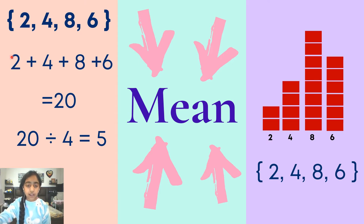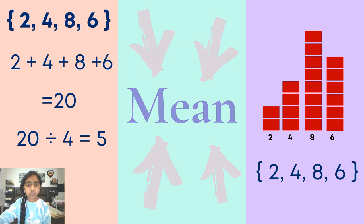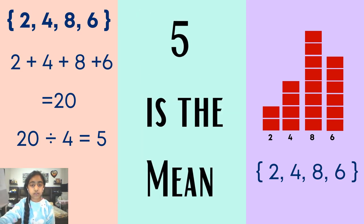Now the next step, or the last step, is to divide the answer you've got by the amount of digits in your data set. In this example, we will divide 20 by 4 as there are 4 digits in the data set. So 20 ÷ 4 = 5. The mean or average of this data set is 5.